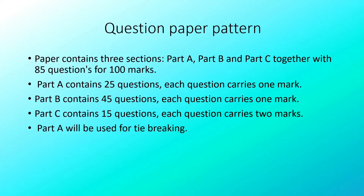The question paper pattern has three parts: Part A, Part B, and Part C. Part A has 25 questions, each carrying one mark. Part B has 45 questions. Part C has 15 questions, and each question in Part C carries two marks.